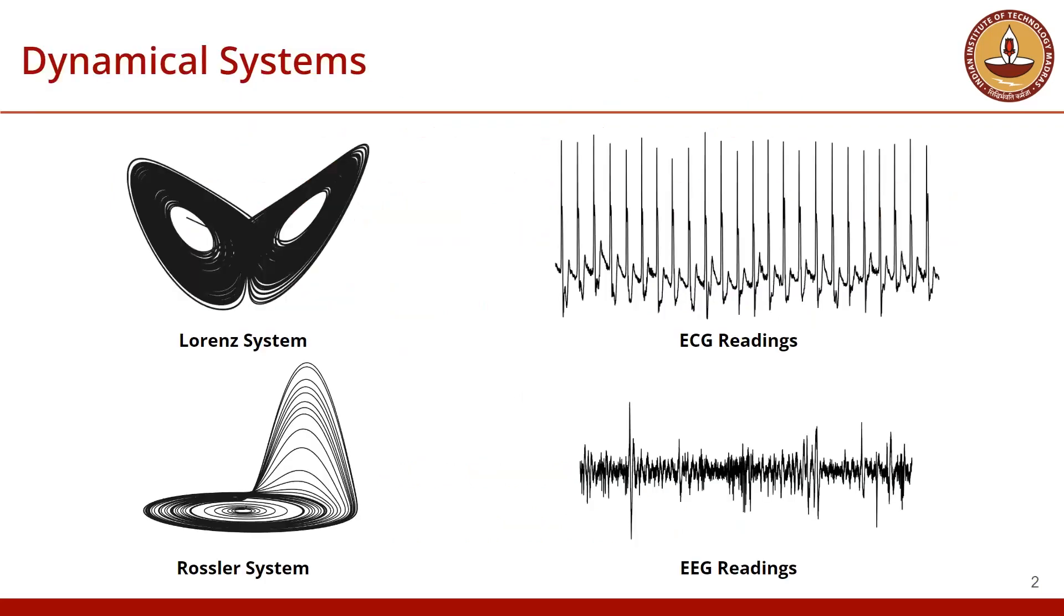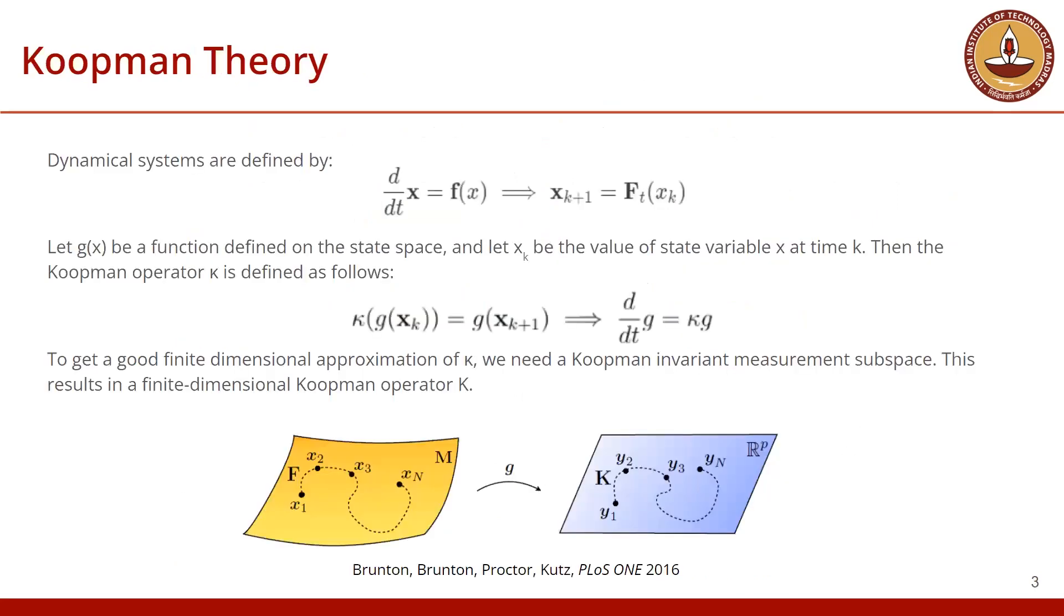Dynamical systems are usually understood by their evolution equations and visualized by integrating them forward in time. However, with real life dynamical systems, evolution equations are not always available. Predicting chaotic dynamical systems becomes even harder.